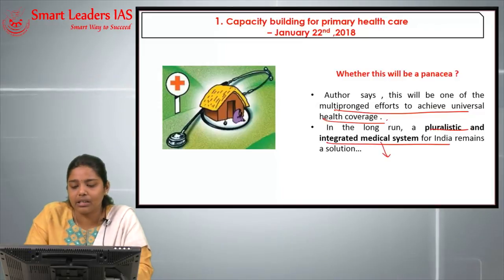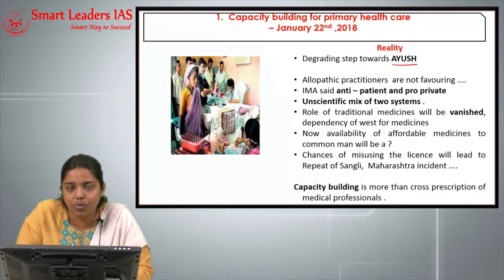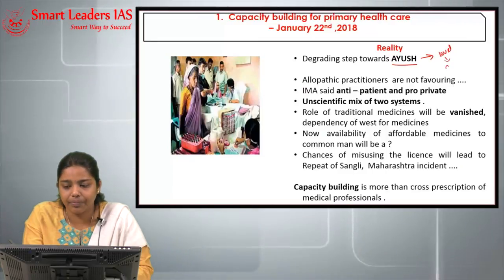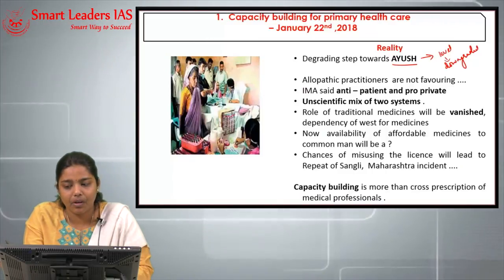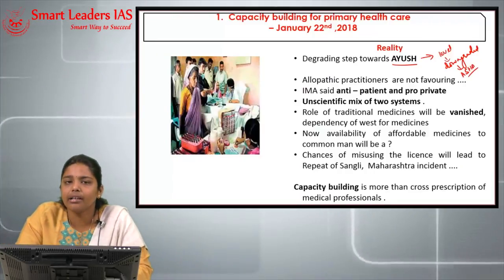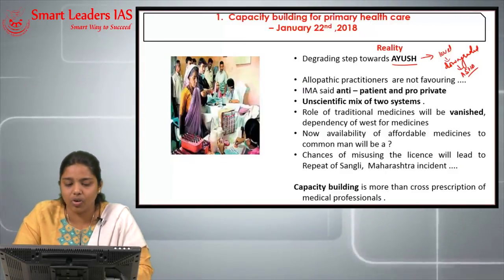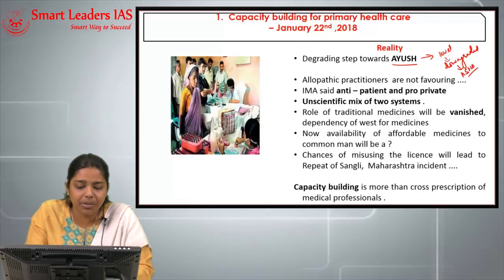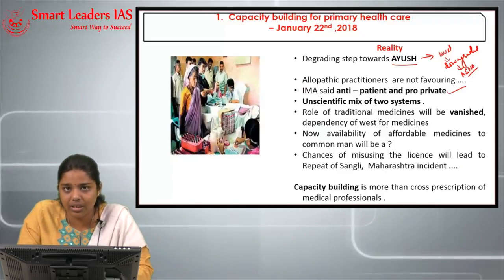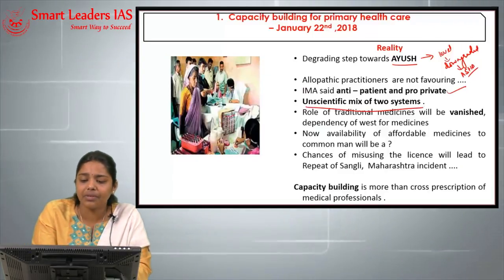However, moving to the reality — this is seen as a highly degrading step towards Ayush because Ayush doctors strongly protest that their level has been downgraded. After this recommendation, Ayush doctors are being treated at the level of ASHA workers in primary healthcare. Allopathic practitioners are also not favouring this, as the Indian Medical Association called it anti-patient and pro-private. They argue it is an unscientific mix of the traditional Ayush system and the modern medicine system.